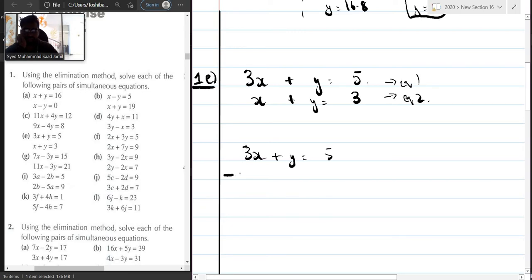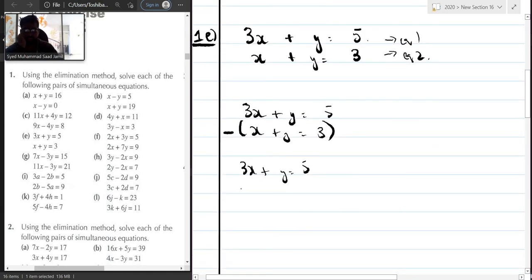So you write down minus sign, put a bracket x plus y is equal to 3, and close the bracket. So this becomes 3x plus y is equal to 5, and the equation you multiplied with the minus sign will become minus x minus y is equal to minus 3. So now plus y minus y gets cancelled out. 3x minus x is 2x, and 5 minus 3 is also 2. x is equal to 2 divided by 2. x is equal to 1.